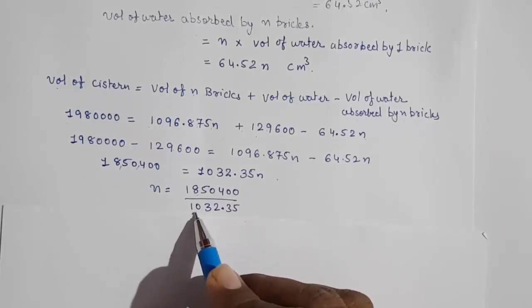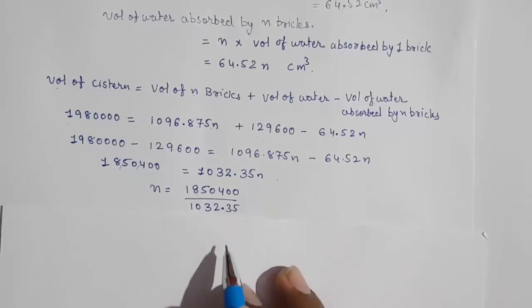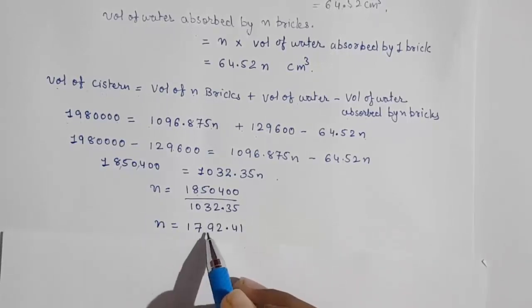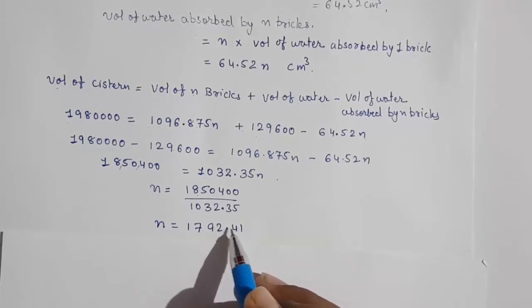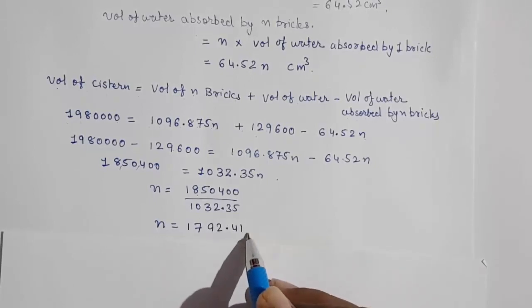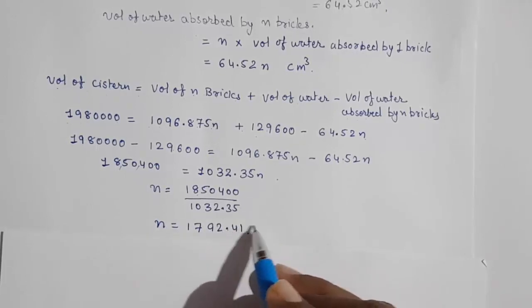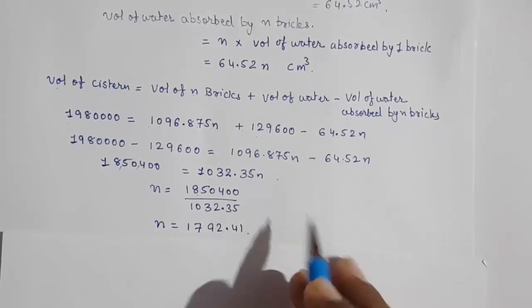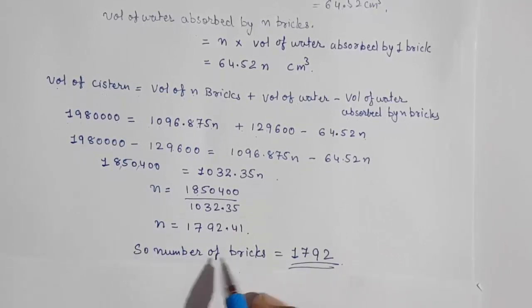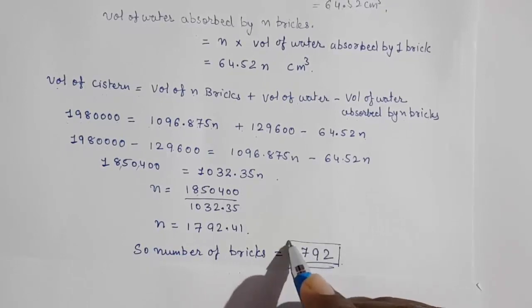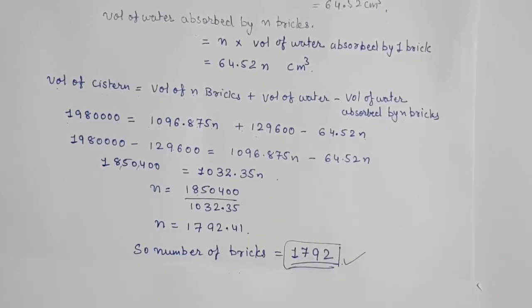Dividing 18,50,400 by 1032.35, we get n ≈ 1792.41. Since it will not be a perfect whole number and we cannot exceed the capacity, we round down. Therefore, the number of bricks = 1792. Thank you so much for watching. If you like it, please subscribe to my channel and also join my WhatsApp group.